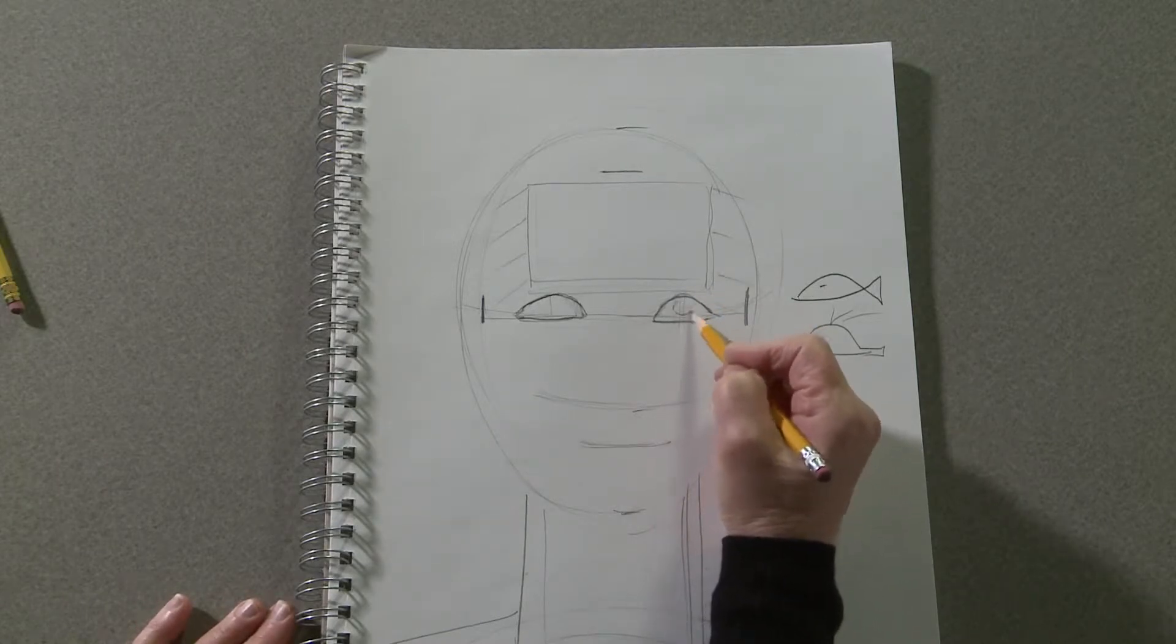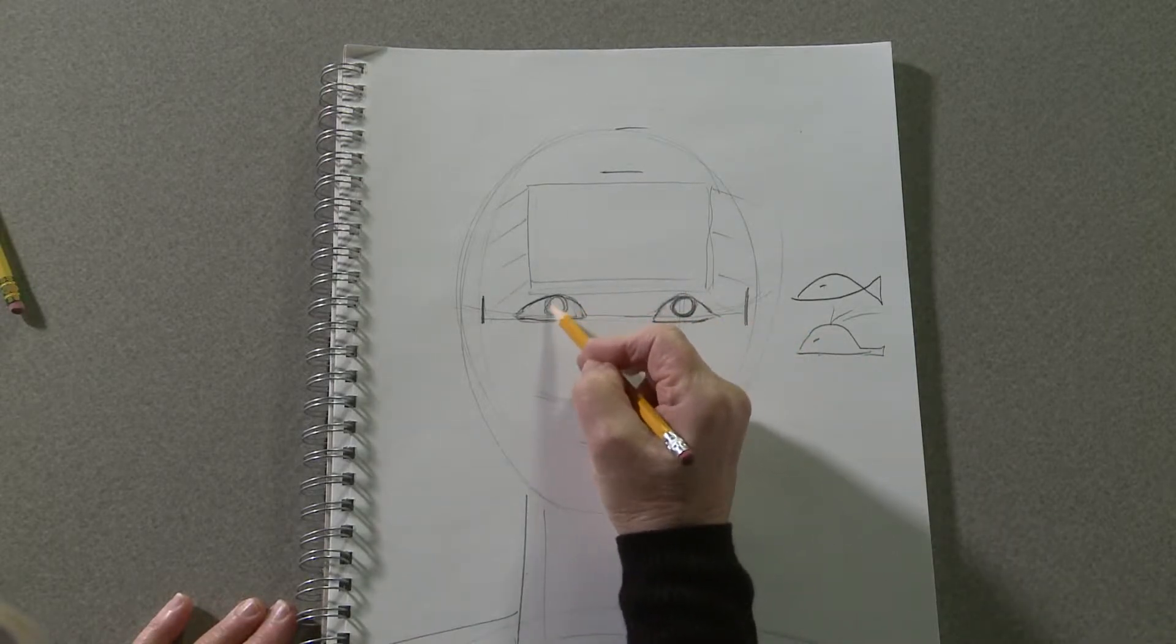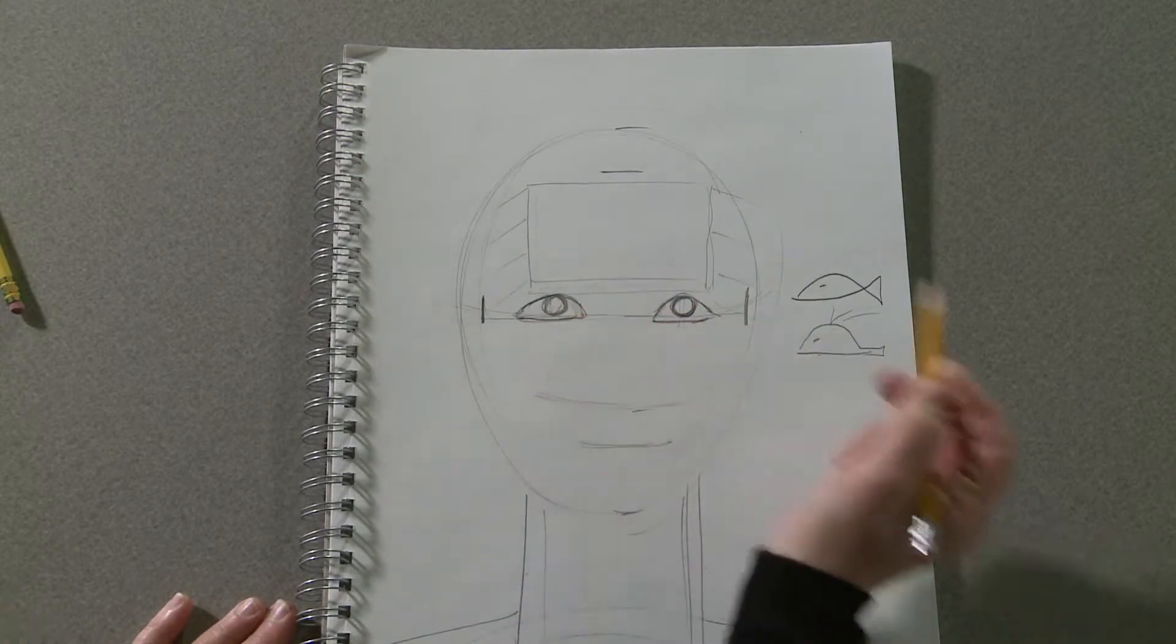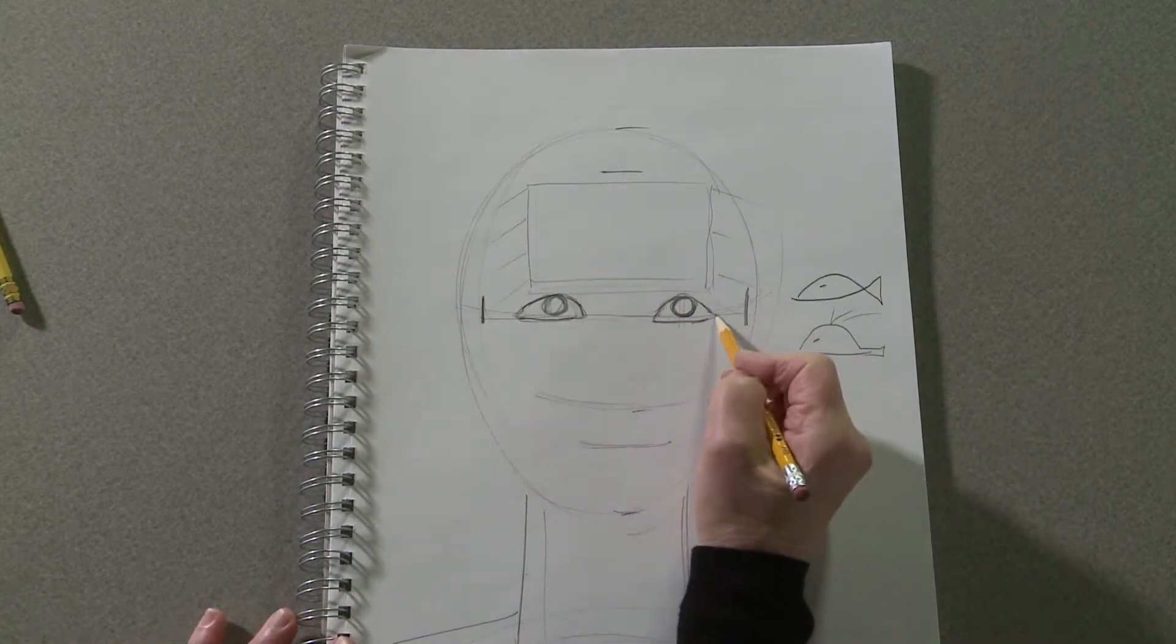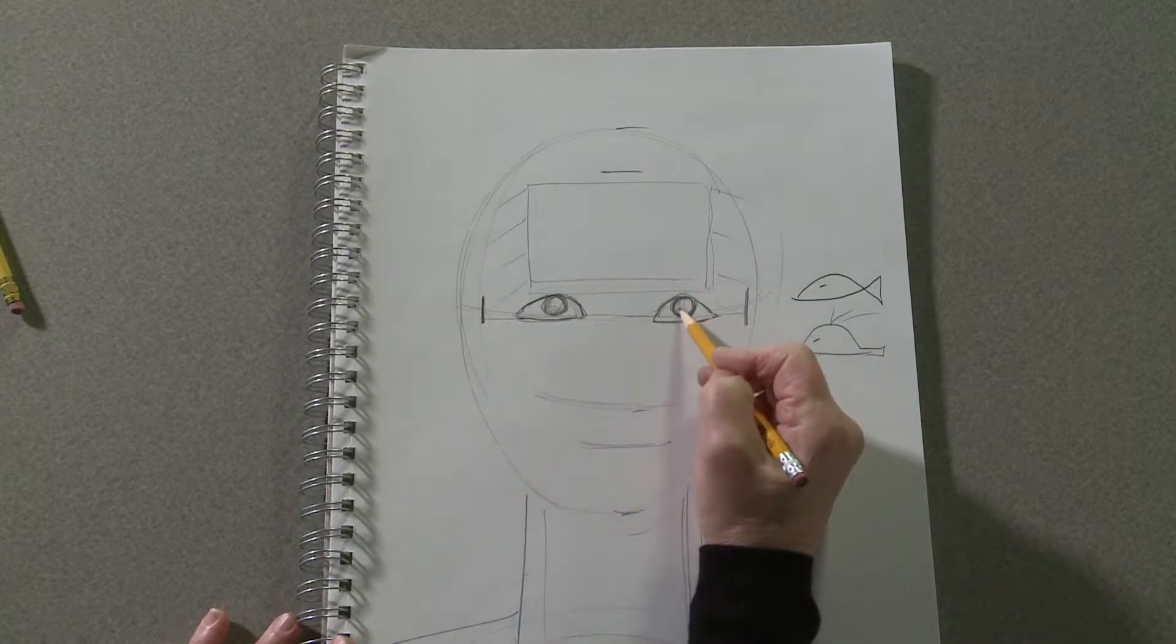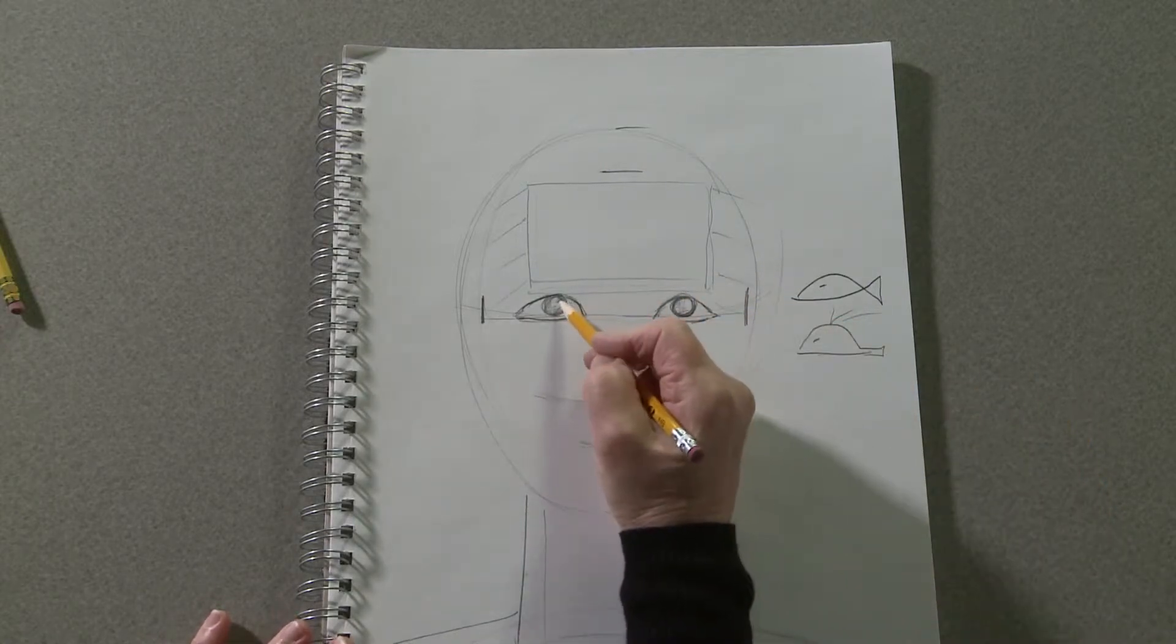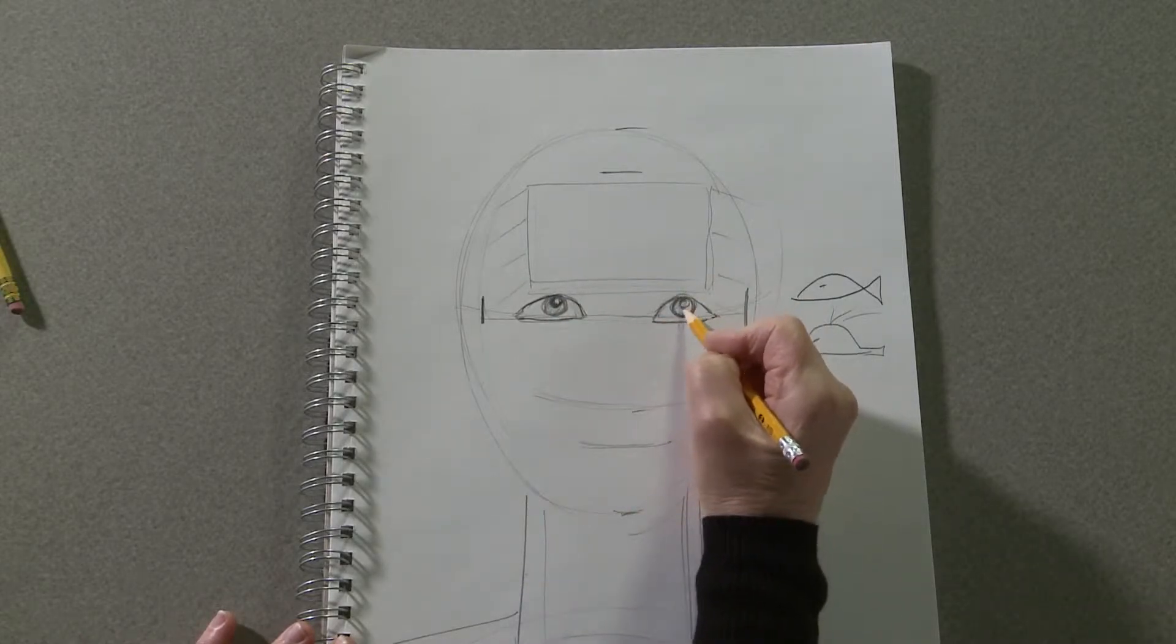Now we'll draw the irises. Make circles that aren't too big, aren't too small. Look at yourself in the mirror and notice the size of your iris. You can color them in, leave them white for now, it doesn't matter. And then we'll draw the pupils. Not too big, not too small.